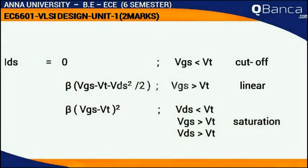Relationship between IDS and VGS for various regions of operation: IDS = 0 if VGS < VT (cutoff); IDS = β(VGS − VT − VDS²/2) if VGS > VT, linear region; IDS = β(VGS − VT)² if VDS > VGS − VT (saturation).